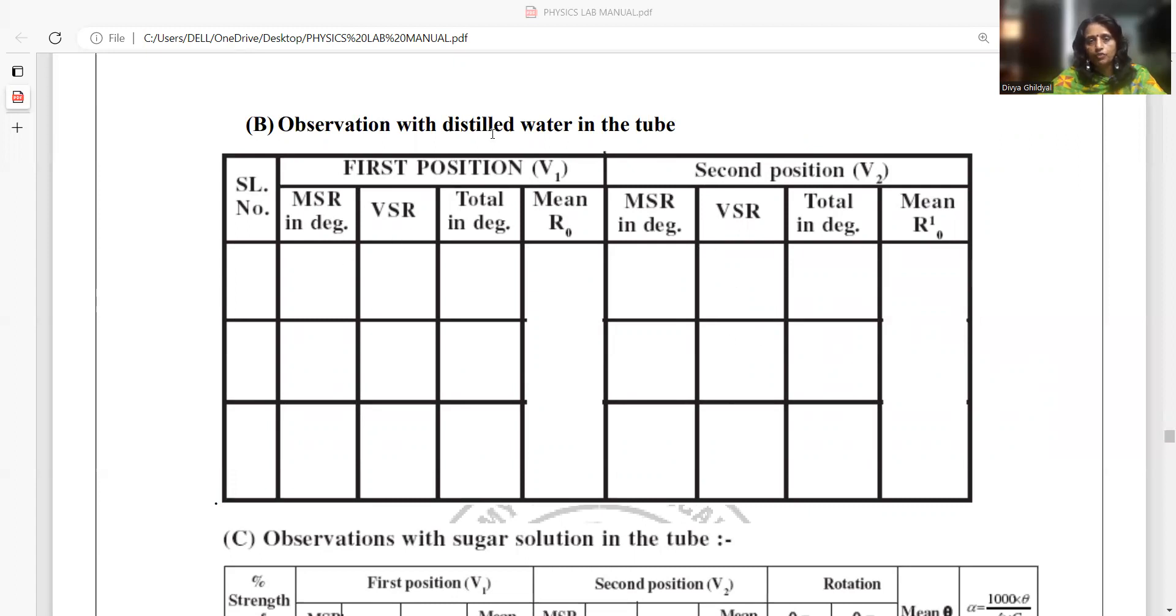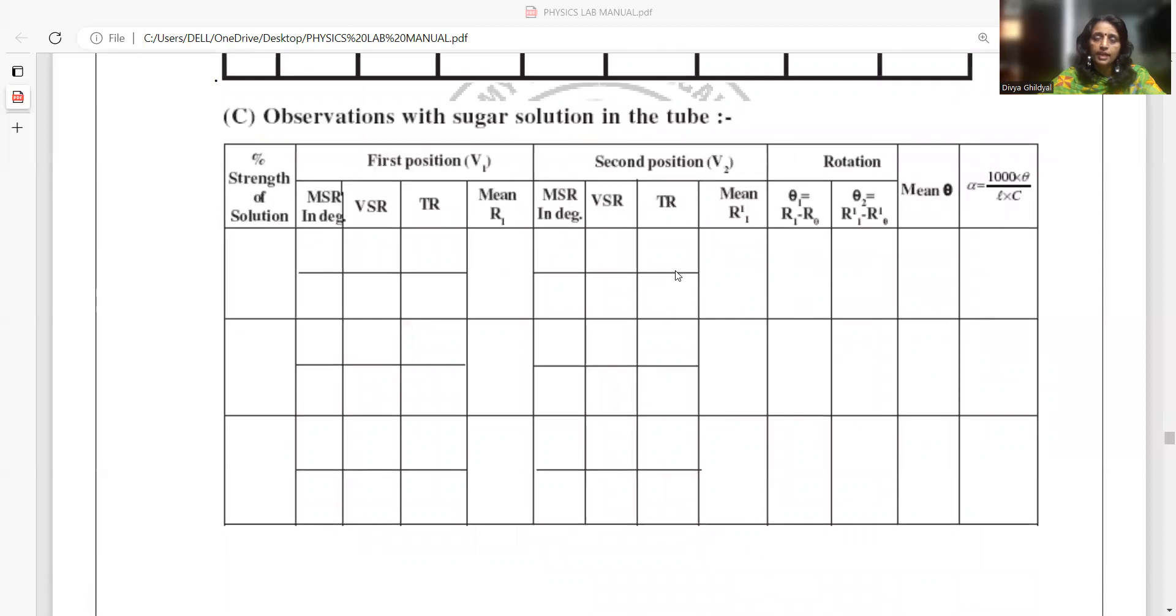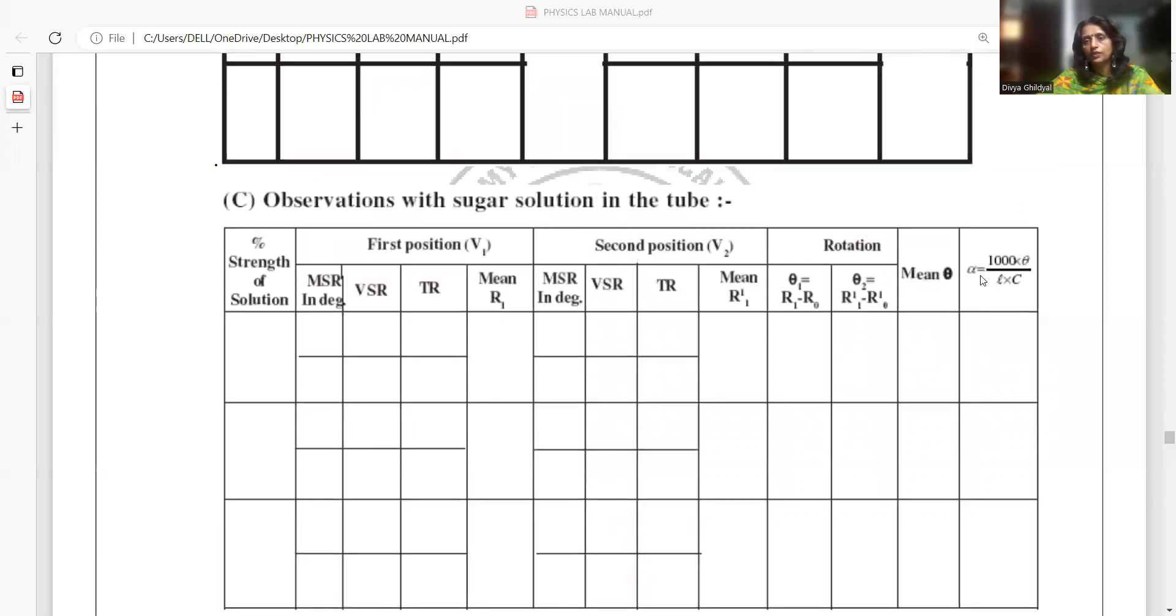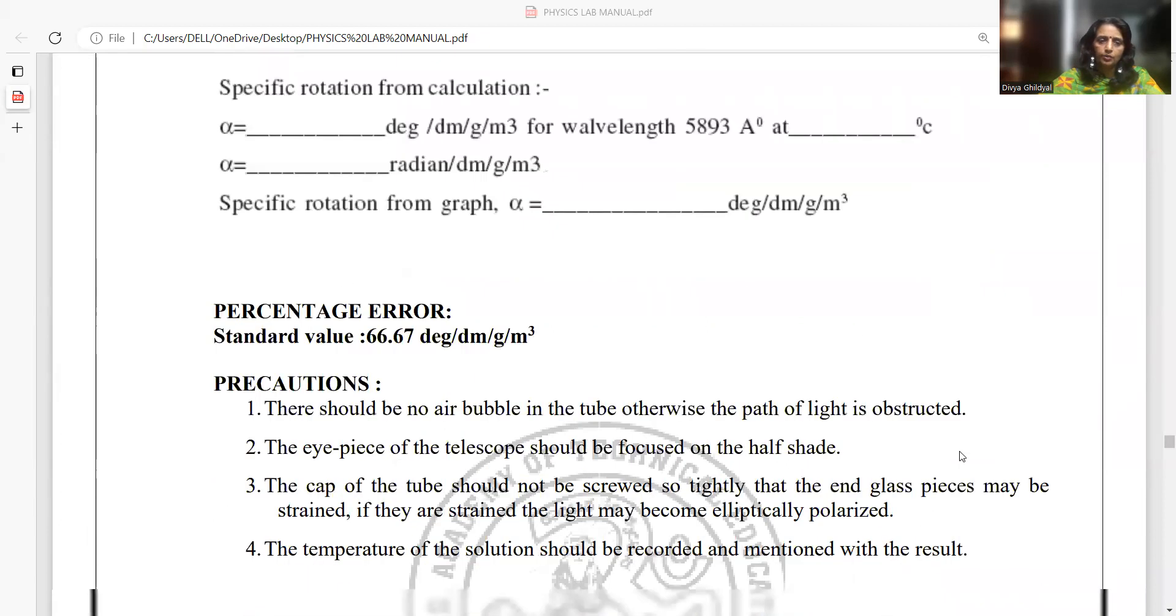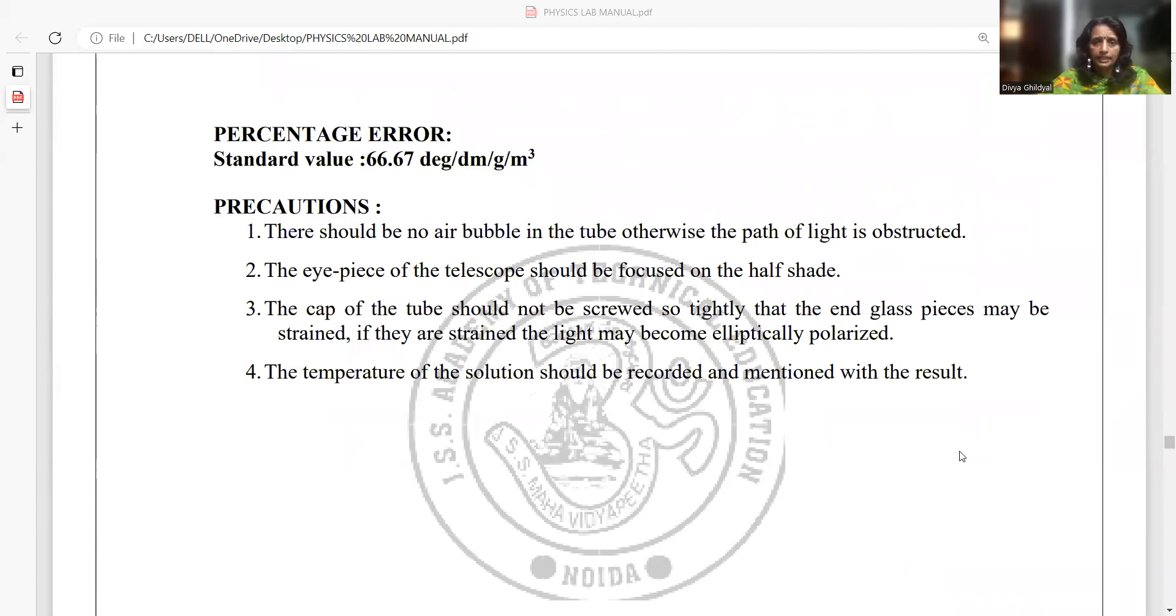Suppose I set my tube with distilled water for 0 degree and 180 degree. Now, I will add sugar solution to my setup and immediately this plane is going to rotate. Suppose I get concentrations of 8%, 10%, and 12%. The amount of rotation of MSR, VSR, I will note for the same. Take the mean of rotation, put it in the value of specific rotation formula: 1000 × suppose 13 degree rotation has taken place / length 20 centimeter × concentration, suppose 8%. And then I will get the answer for specific rotation. Usually, sugar solutions show a specific rotation of 66.6 degree, which is a standard value, but it can vary as per your experimental setup.